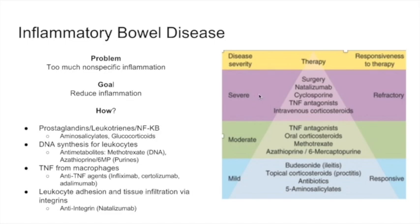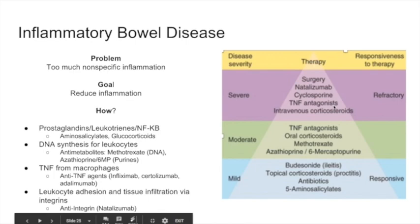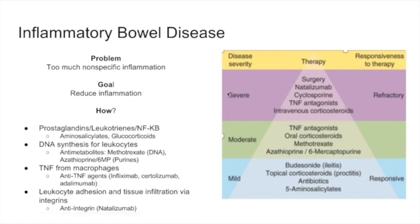For severe disease, you can use intravenous corticosteroids, TNF antagonists, cyclosporine, heavy-duty immune suppression, natalizumab, and finally surgery. On the exam, they'll most likely ask about a patient with mild disease — first line is topical corticosteroids or aminosalicylates — or moderate disease, which calls for anti-metabolites or TNF antagonists, or severe disease requiring IV corticosteroids or any of these agents.